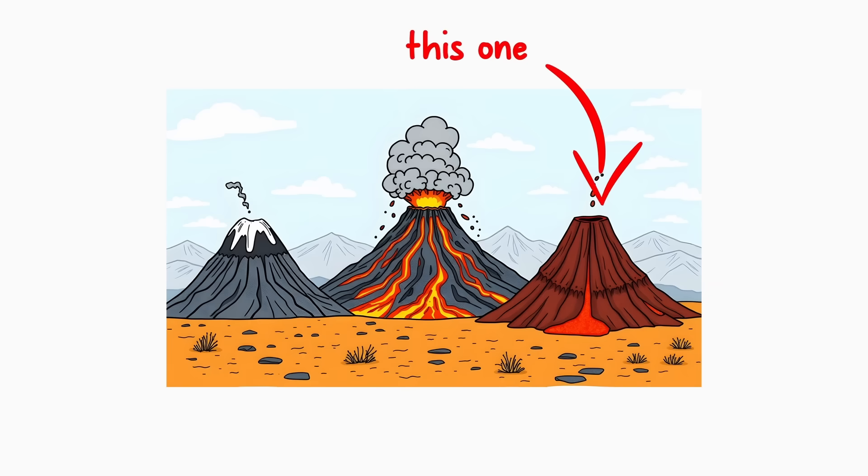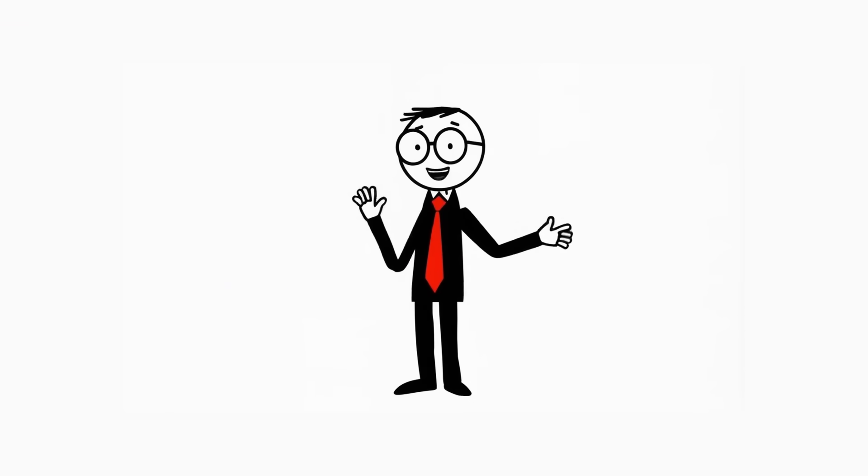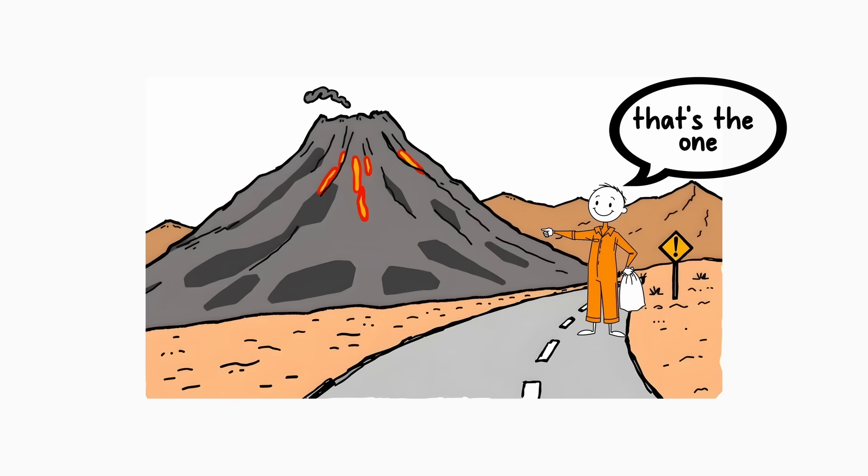What we're looking for is a shield volcano. These are the ones with those iconic lava lakes and slow, steady eruptions. The problem is, shield volcanoes are relatively rare. But for the sake of this thought experiment, let's assume we somehow manage to find ourselves a nice, docile shield volcano.